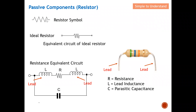The resistor has a symbol I'm sure you're all familiar with. For an ideal resistor, the equivalent circuit is purely the R factor. However, the real resistor equivalent circuit looks different — you can see the two leads, and because a wire behaves like an inductor, there are two inductors that appear in the equivalent circuit. There is also a parasitic capacitor in the resistor equivalent circuit. Let's take a look at two extremes — low frequency and high frequency — to see how the resistor equivalent circuit behaves.